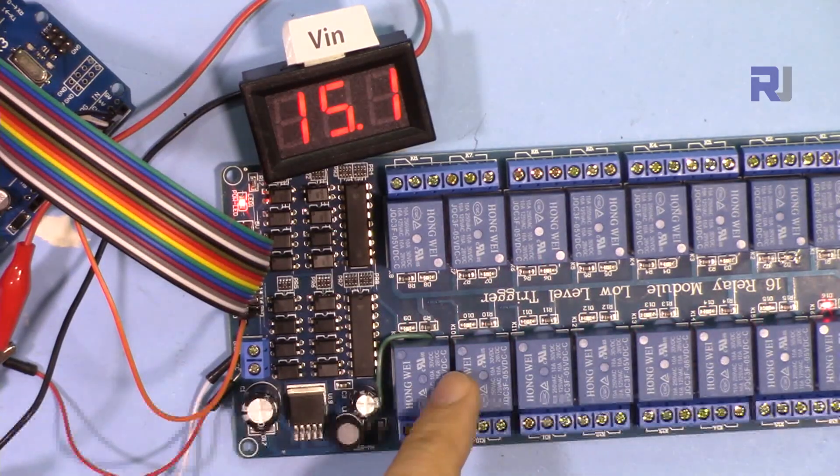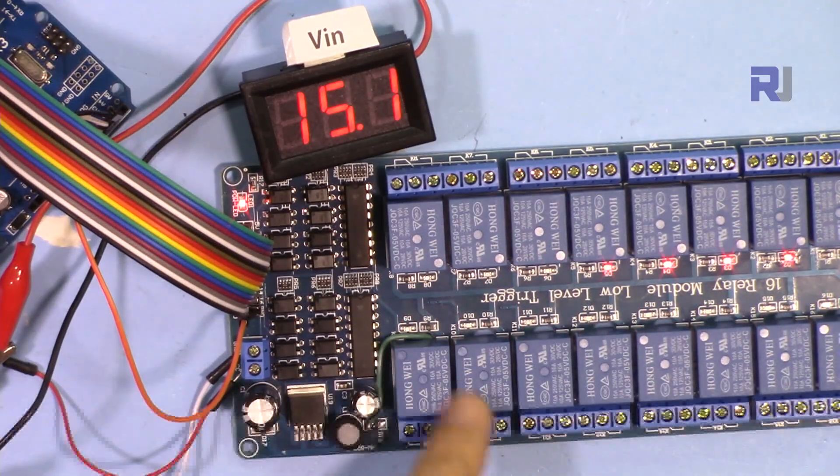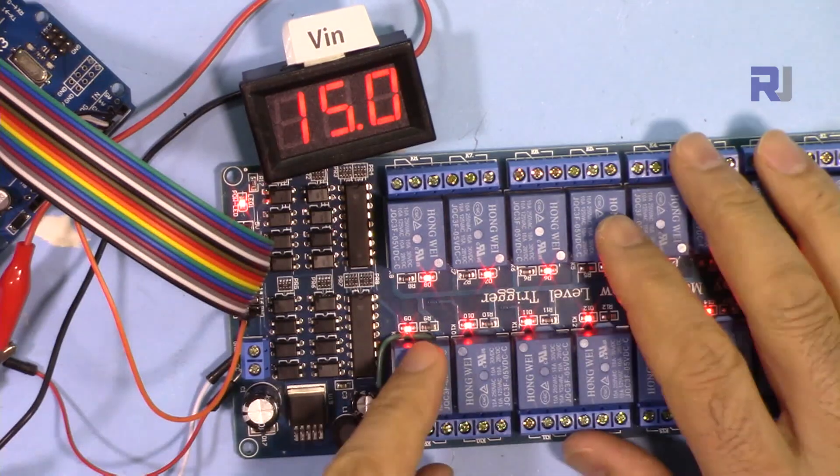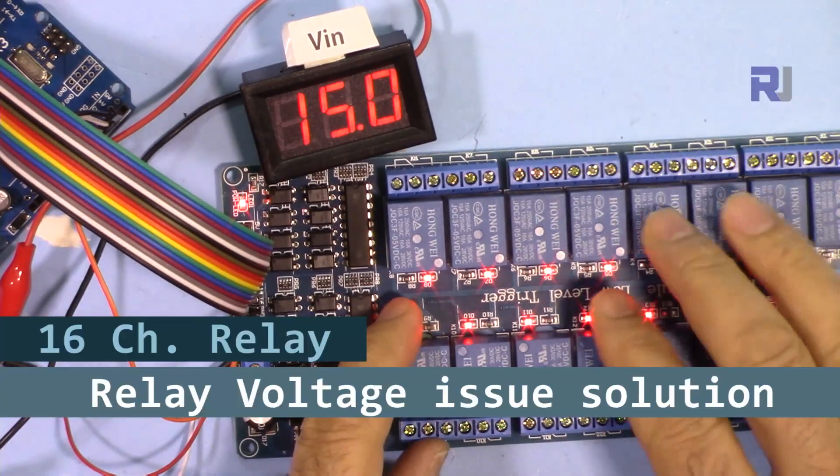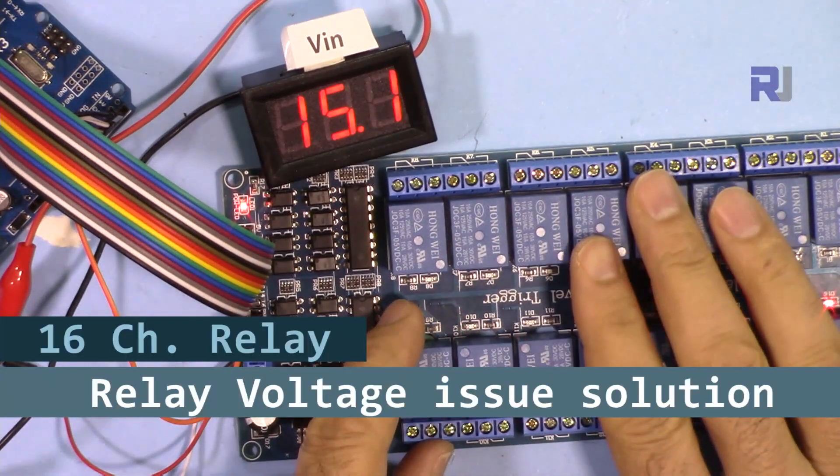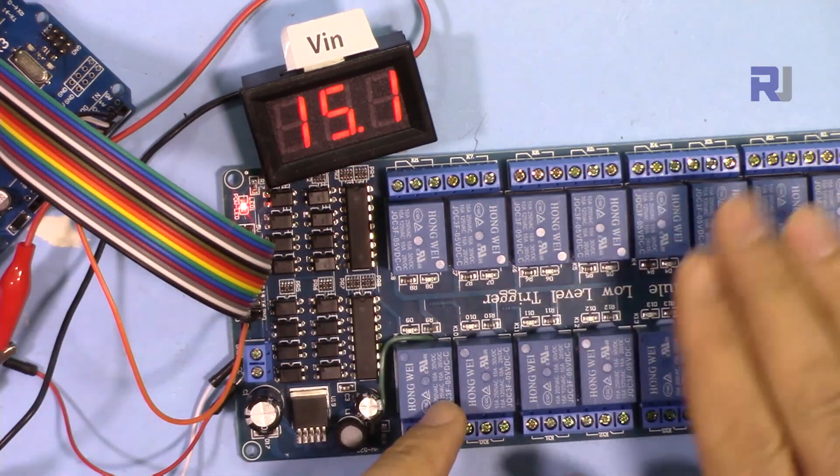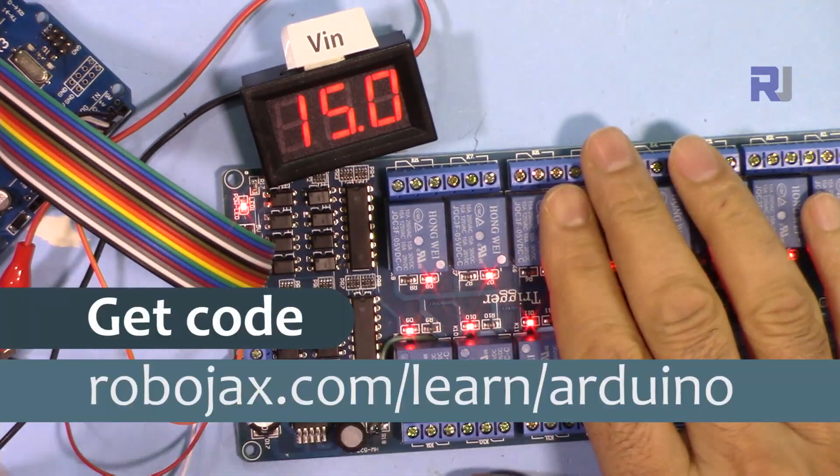Hi, welcome to a problem-solving video by Robojax. In this video we are going to see how we can fix this 16-channel 5-volt relay module for Arduino that is receiving incorrect voltage from the input.